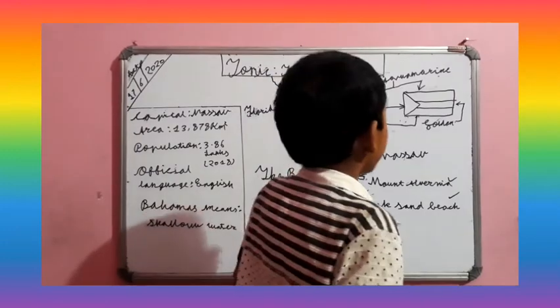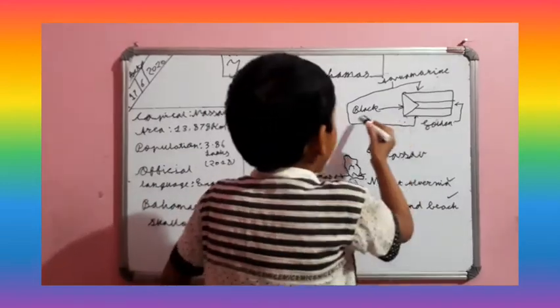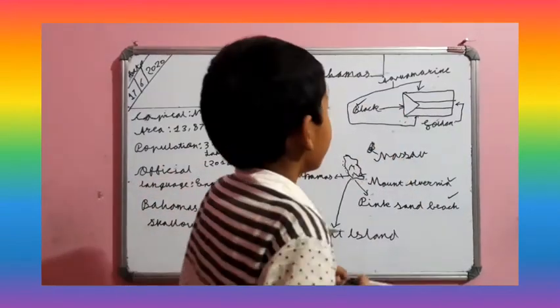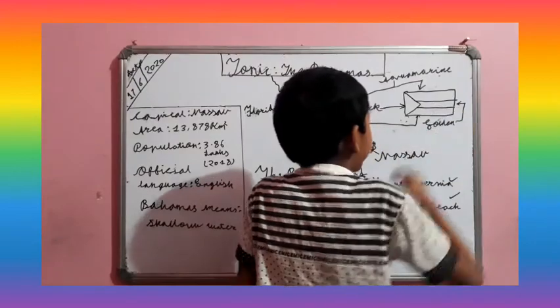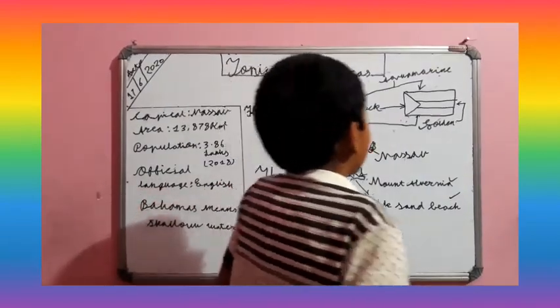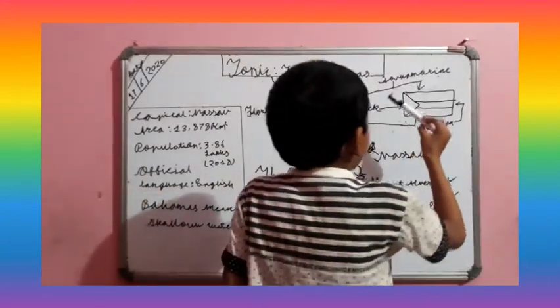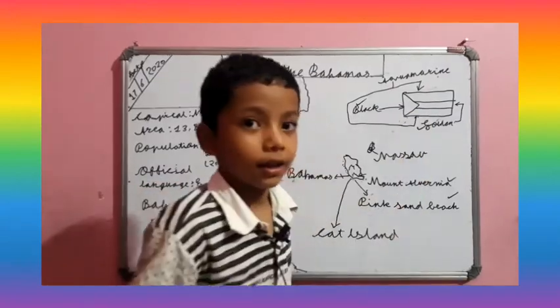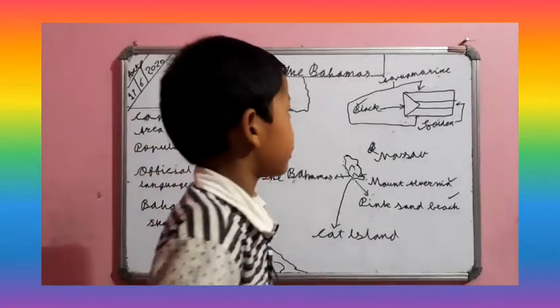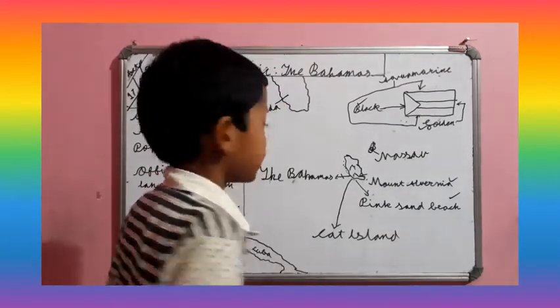Let's see the flag of Bahamas. This is a black triangle. It's golden. These are the colors of Bahamas flag at the top and bottom.